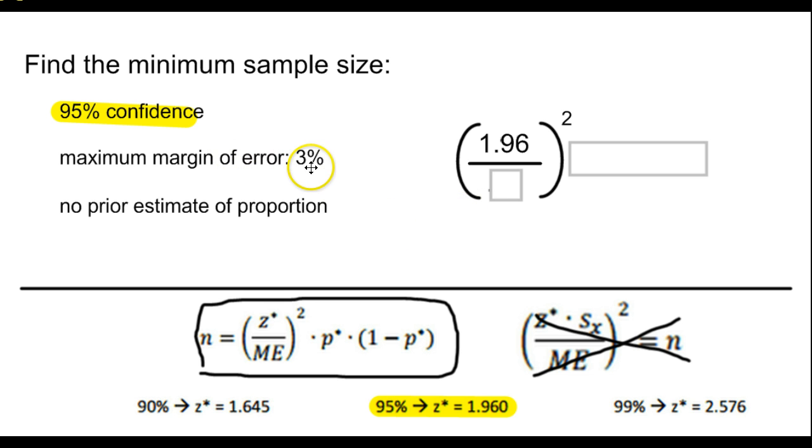Next part, we have our margin of error. We want to be within 3%. Now remember, all of these numbers, when you're dealing with proportions, are written as decimals. So that means that 3% is going to be written as 0.03. So let's just make sure that these are matching up in your mind. So 3% is 0.03.